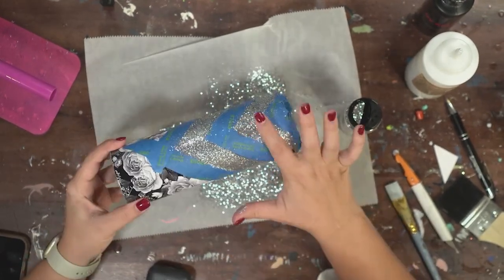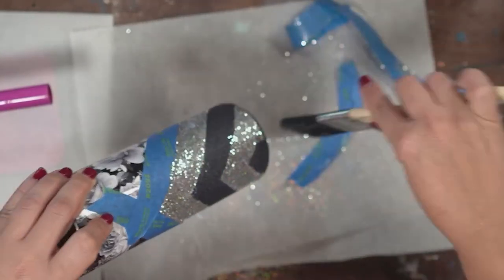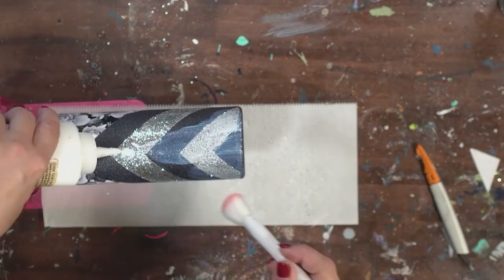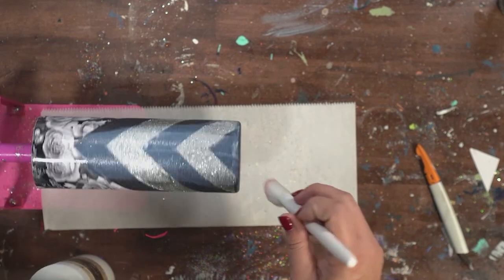So I removed that tape once it was dry and used a brush to make sure I had all of the silver glitter removed from the tumbler.